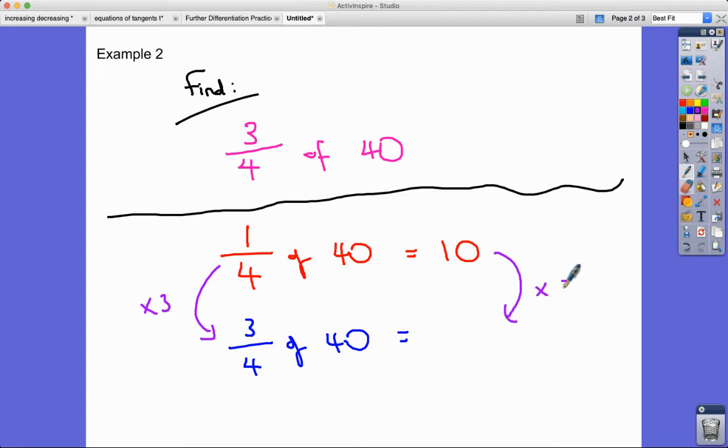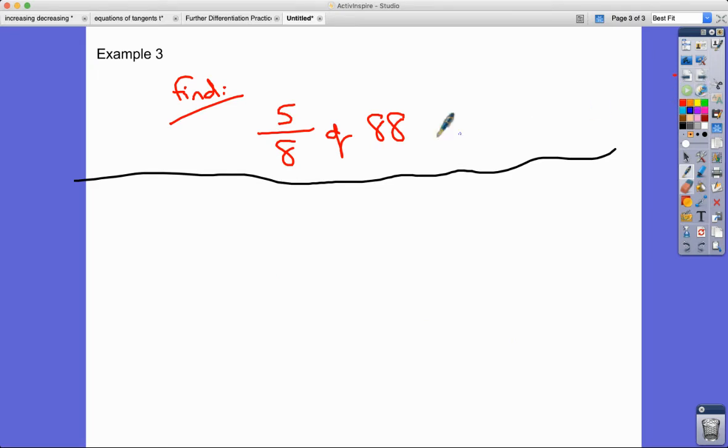Finally, example 3. This time it's a bit more difficult looking, but not really. We're going to find 1/8, so it's 5/8 of 88. Of the 5/8 of 88 that we're going to find, first thing we need to do is to find 1/8 of 88. 88 divided by 8 equals 11.